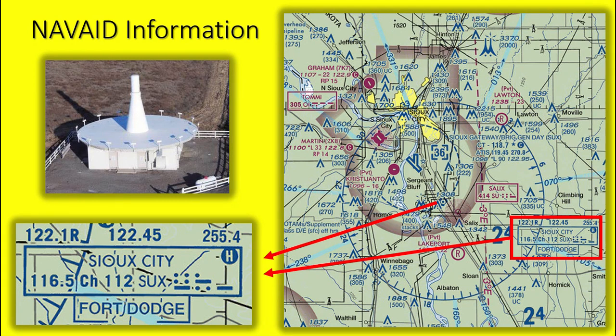Approximately five miles southeast of Sioux City Airport, there's a VOR-TAC — the NAVAID type you'll use most often in T-6 flight training. Like airfields, NAVAID boxes contain a lot of important information. Looking inside the information box first, we see the VOR's name is Sioux City VOR, and its identifier is Sierra Uniform X-Ray. The VOR frequency is 116.5.